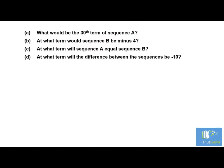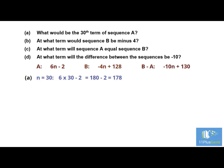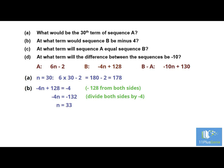Now that we have the Nth term of the sequences we can answer the questions. Question A: What would be the 30th term of sequence A? For the 30th term we substitute N equals 30 into the Nth term of sequence A, which gives us 6 times 30 minus 2. 6 times 30 equals 180, minus 2 equals 178. Question B: At what term will sequence B equal minus 4? The Nth term for sequence B is minus 4N plus 128, and this must equal minus 4. We subtract 128 from both sides to get minus 4N equals minus 132, then divide both sides by minus 4 to get N equals 33. The 33rd term will be minus 4.